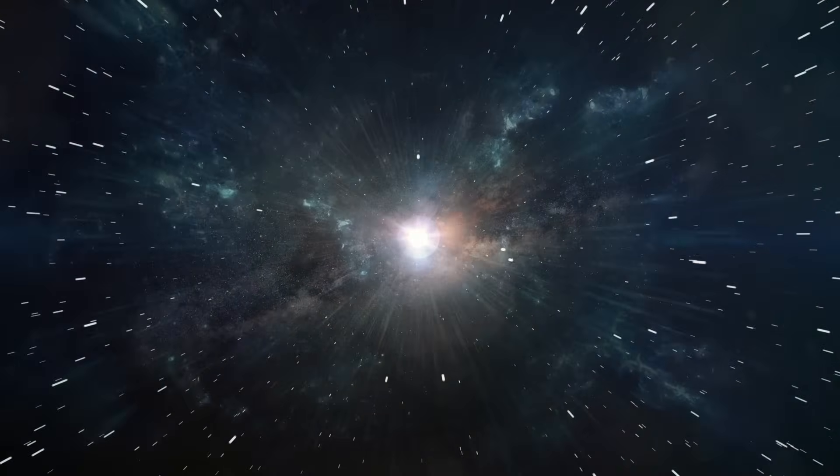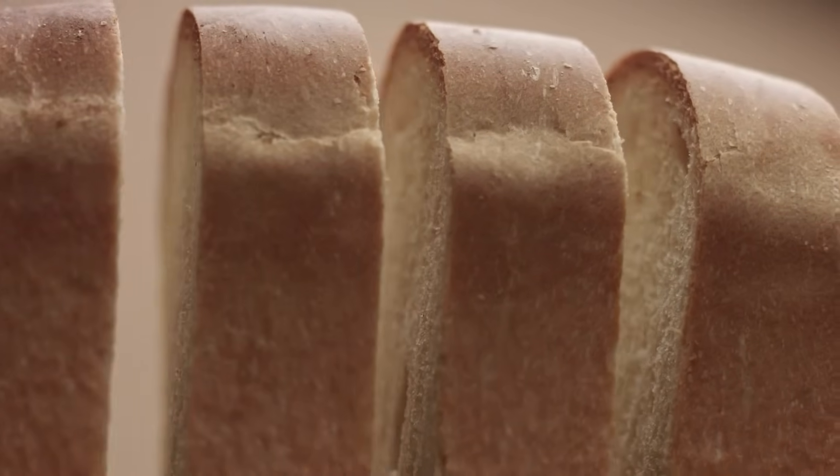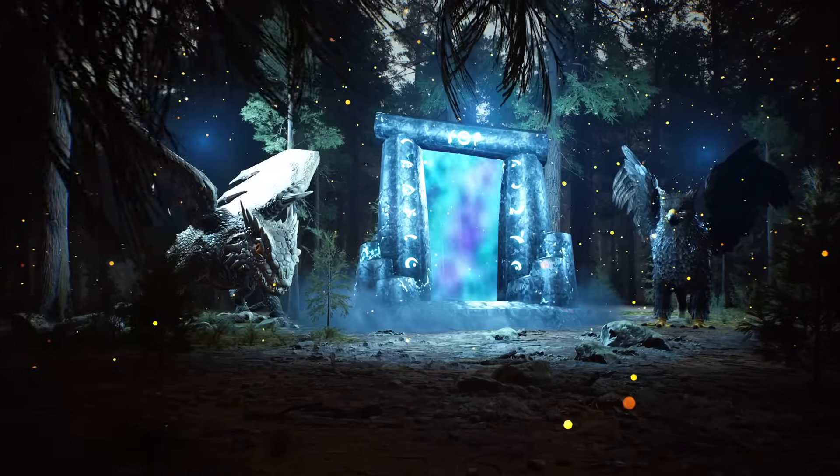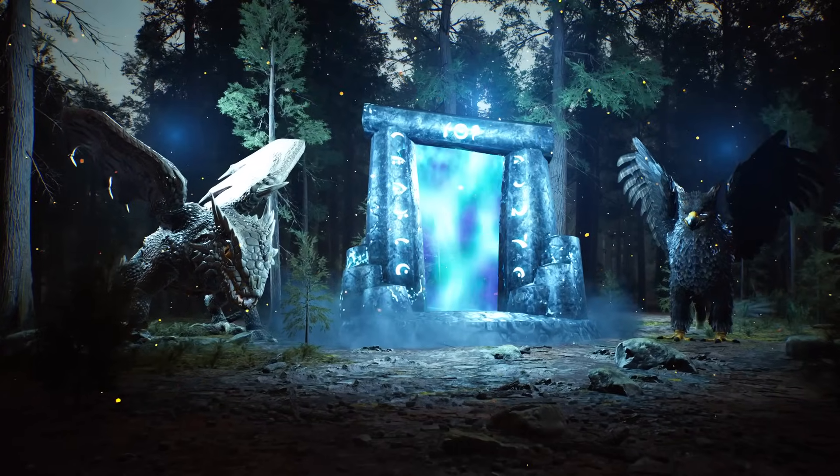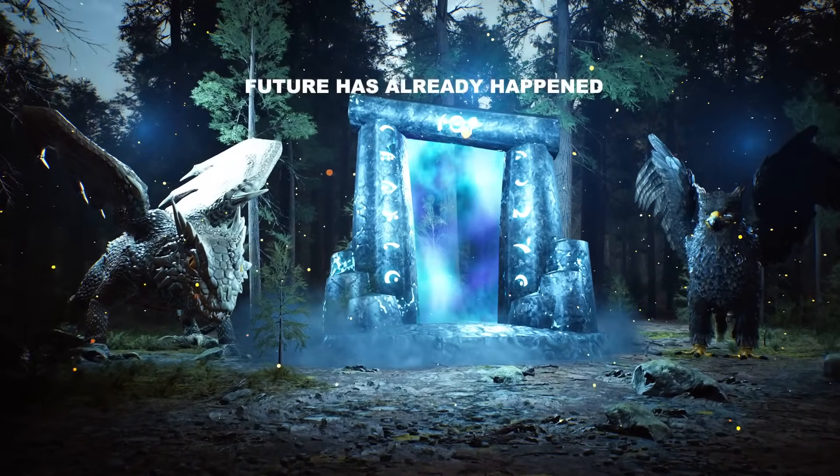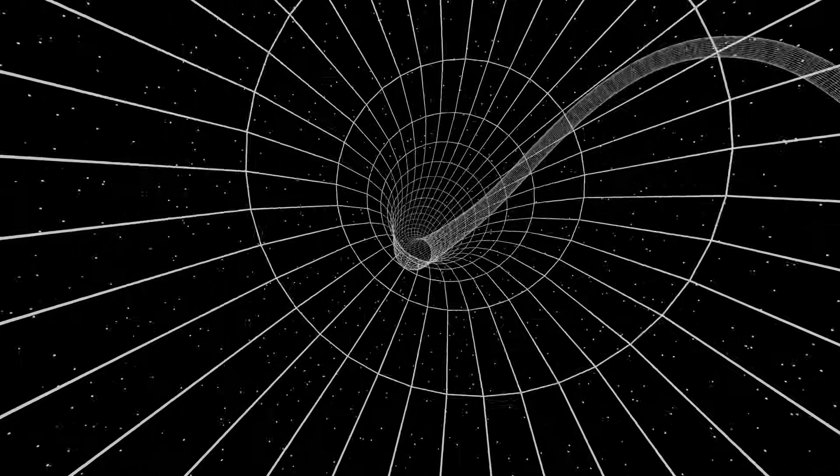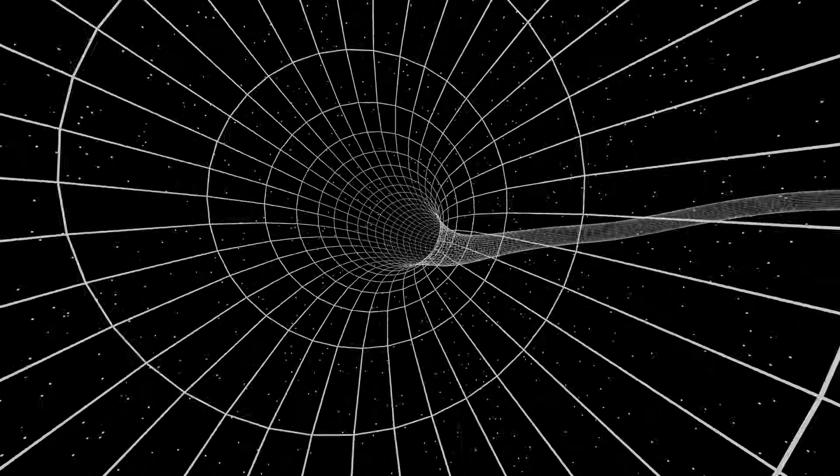Now, let's get really wild and talk about the block universe theory. Imagine the entire history of the universe as one giant cosmic loaf of bread. Each slice represents a moment in time. According to this theory, all these slices exist simultaneously. The future is already there, baked into the cosmic loaf, we just haven't reached that slice yet. If this is true, then in a sense, the future has already happened. It's like a movie reel that's all there, but we're only seeing it frame by frame. This idea messes with our notion of free will and makes us question if our choices really matter.